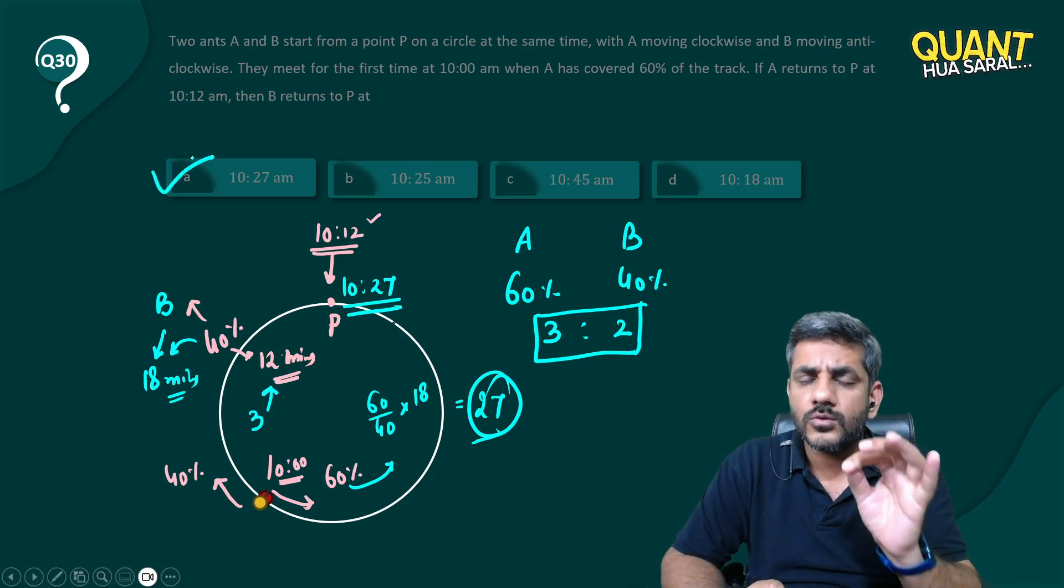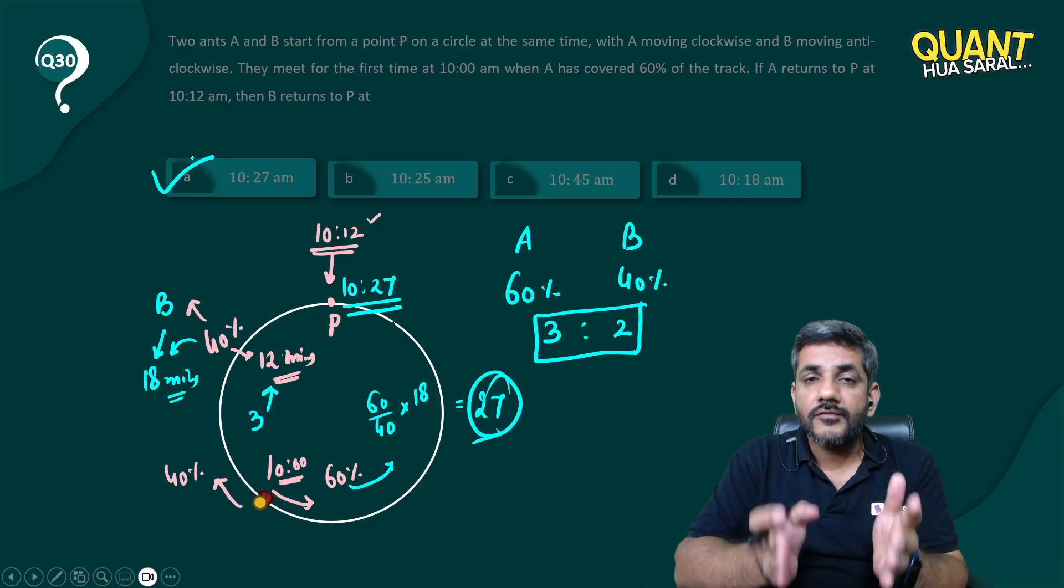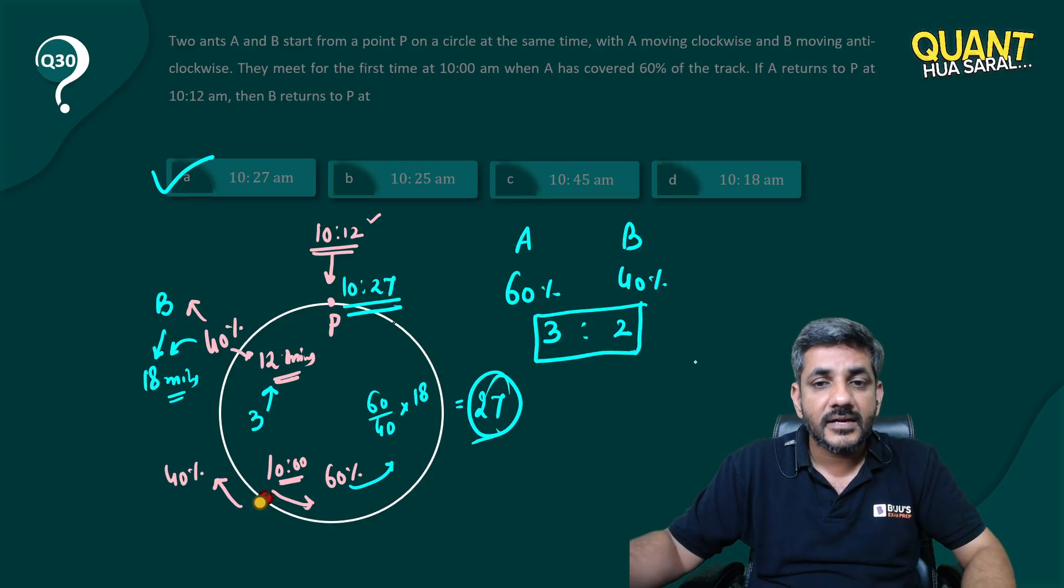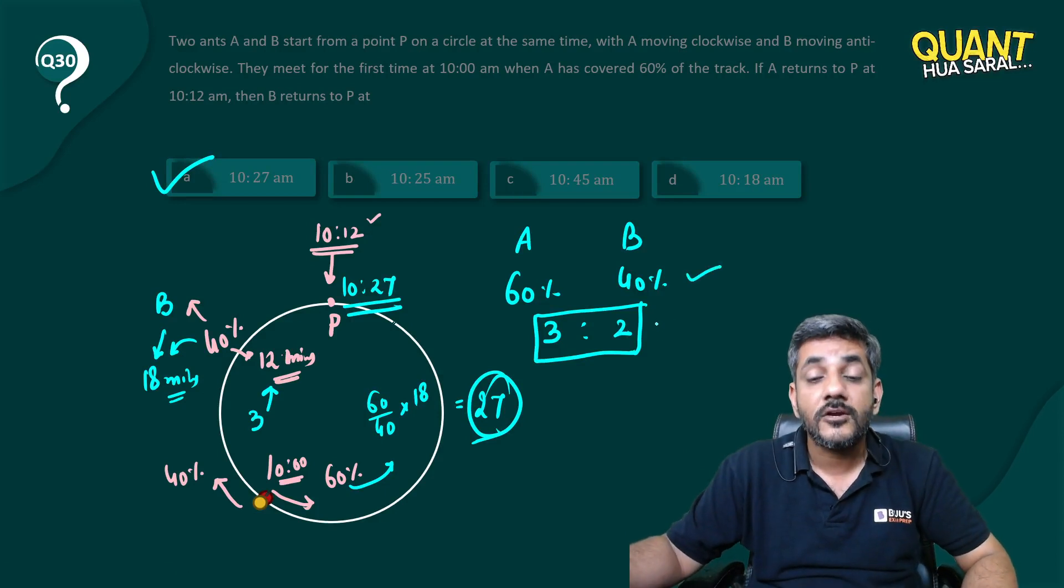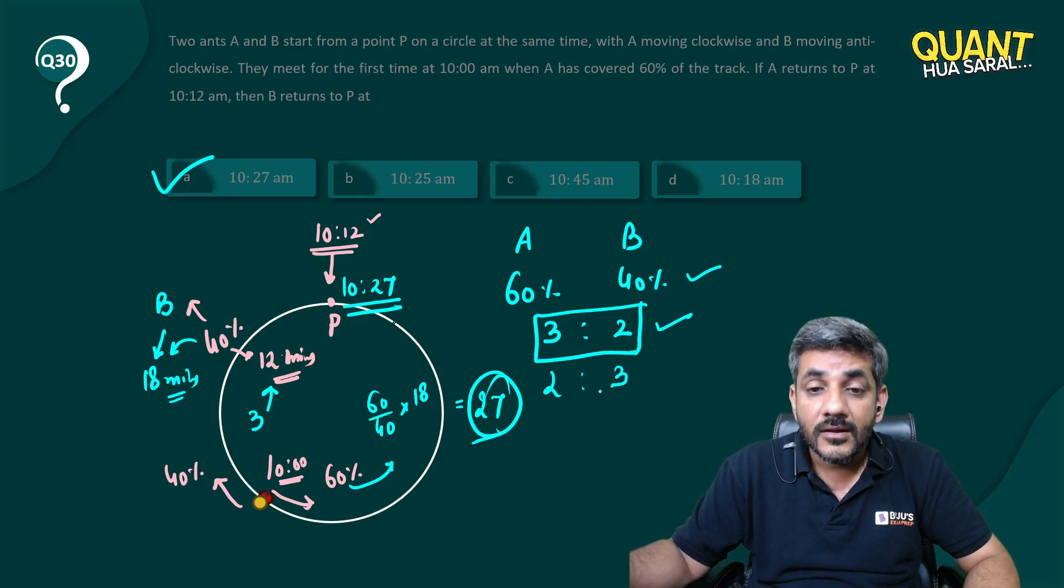The question required just one thing - proportionality. If the time taken is same, the ratio of the distances is equal to the ratio of speeds. And ratio of speeds is inverse of the ratio of time.